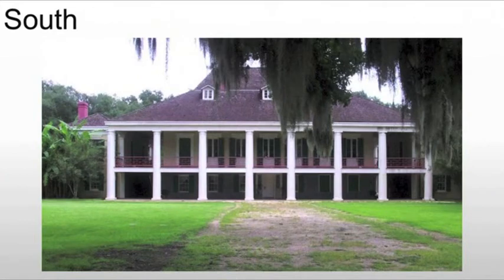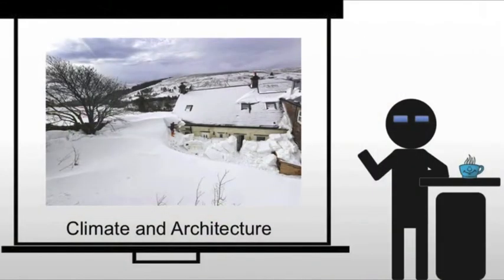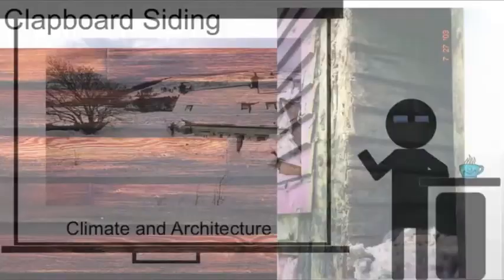They're also based on the climate. Climate and architecture becomes a huge issue. Up until this point, generally speaking, we're building for a single society with a single climate. But of course, North to South, there are huge climatic variations in the United States, and that's what we're going to see.